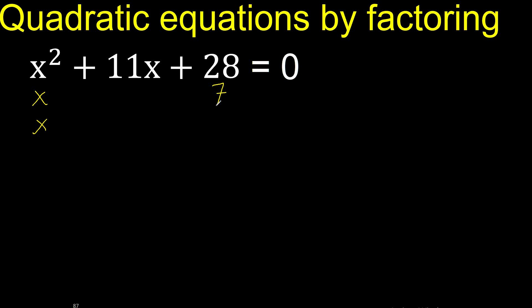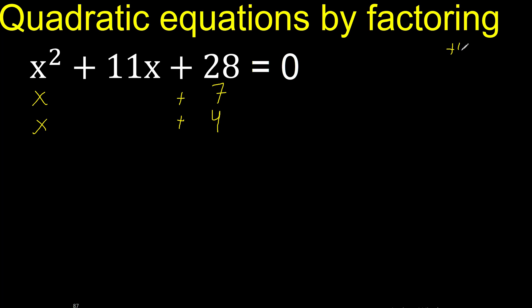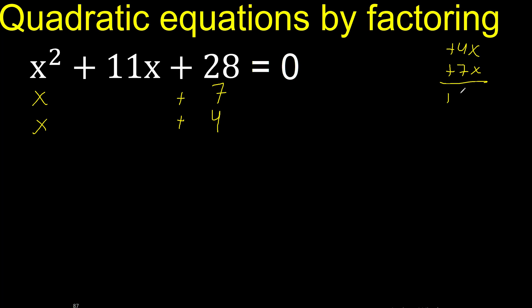Therefore, try another number: 7 multiplied by 4 is 28. Let's try — minus minus is plus, or plus plus is plus. Let's try plus because here is plus. Let's analyze if it is correct: x multiplied by plus 4, x multiplied by plus 7 — that gives 11x plus. Equal — therefore it is correct.